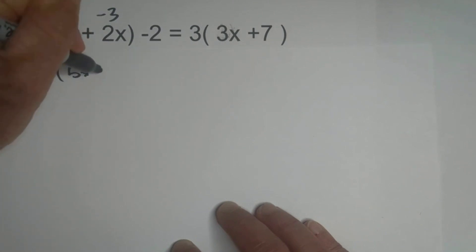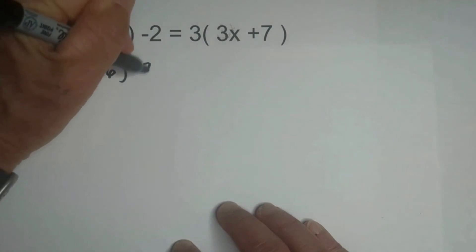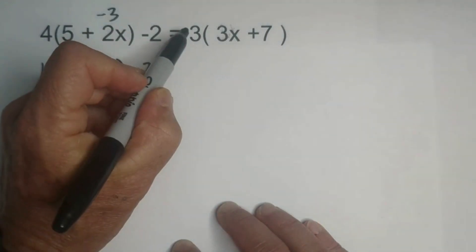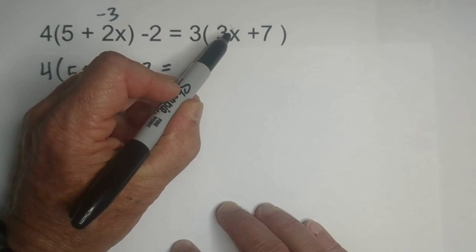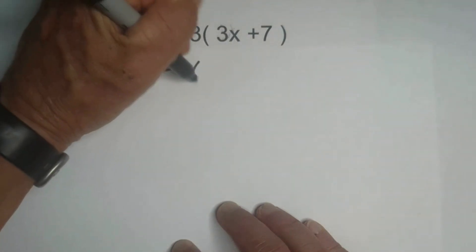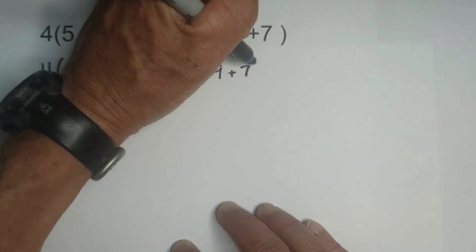I don't need a plus, a negative 6, and remember the negative 2 here, and then 3 times 3 times a negative 3 is, it will be 3 times a negative 9 plus 7.